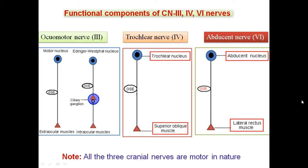Each cranial nerve has functional components. The oculomotor nerve consists of two nuclei: the oculomotor nucleus and the Edinger-Westphal nucleus. The oculomotor nucleus contains general somatic efferent fibers supplying all extraocular muscles except the superior oblique and lateral rectus. The Edinger-Westphal nucleus contains pre-ganglionic and post-ganglionic fibers supplying the intraocular muscles of the eyeball. The trochlear nerve has one nucleus — general somatic efferent — supplying the superior oblique muscle. The abducent nerve also has only one nucleus supplying the lateral rectus muscle. All three cranial nerves are motor in nature.